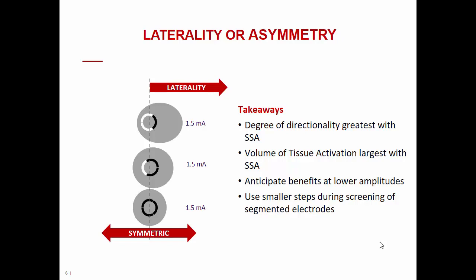When we activate one single segment — called SSA, or single segment activation — we achieve full directionality. However, if we distribute activation across two adjacent segments, called co-activation, we lose most of the opportunities offered by directional systems. The extent of directionality achieved by co-activating two adjacent segments is significantly lower, partly because the two segments tend to cover the area that would otherwise remain deactivated.